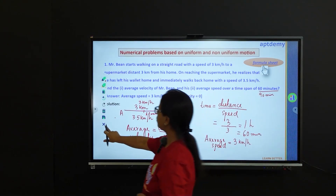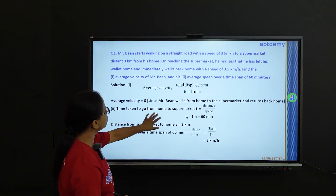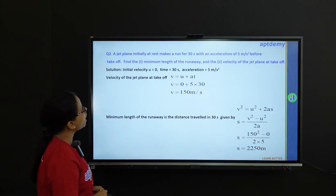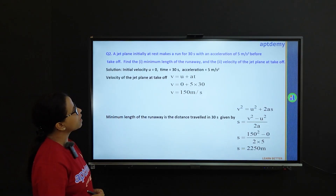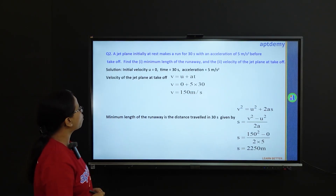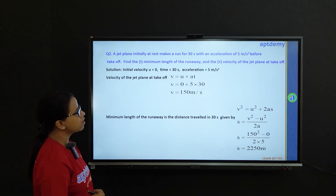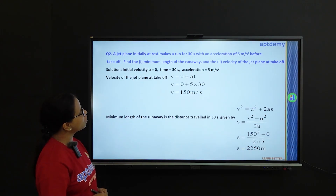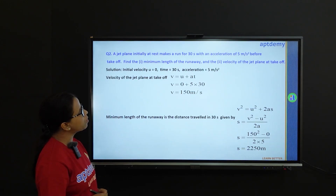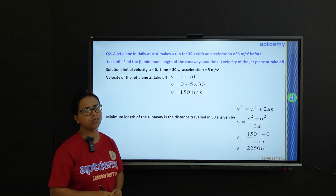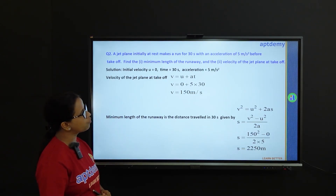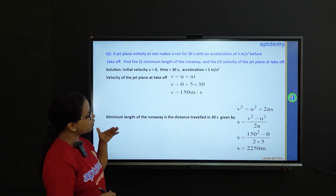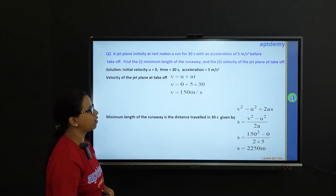Now let us look at the second problem. A jet plane initially at rest makes a run for 30 seconds with an acceleration of 5 m per second square before take-off. Find the minimum length of the runway and the velocity of the jet plane at take-off. The initial velocity of the jet plane is 0 because the plane was initially at rest, the time taken is 30 seconds, and the acceleration is 5 m per second square. We need to find the distance covered in those 30 seconds and the final velocity at the end of the run.